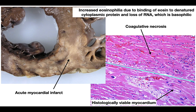With coagulative necrosis, here's one example in the myocardium. In the top left you can see an acute myocardial infarct in the septum and inferior wall of the left ventricle — that yellow discoloration corresponds to what we see to the right. In this section you can see both histologically viable myocardium at the bottom and coagulative necrosis at the top. At the bottom you can see nuclei are preserved, whereas at the top you see the cardiac myocyte structure but without the nuclear or cytoplasmic basophilia.